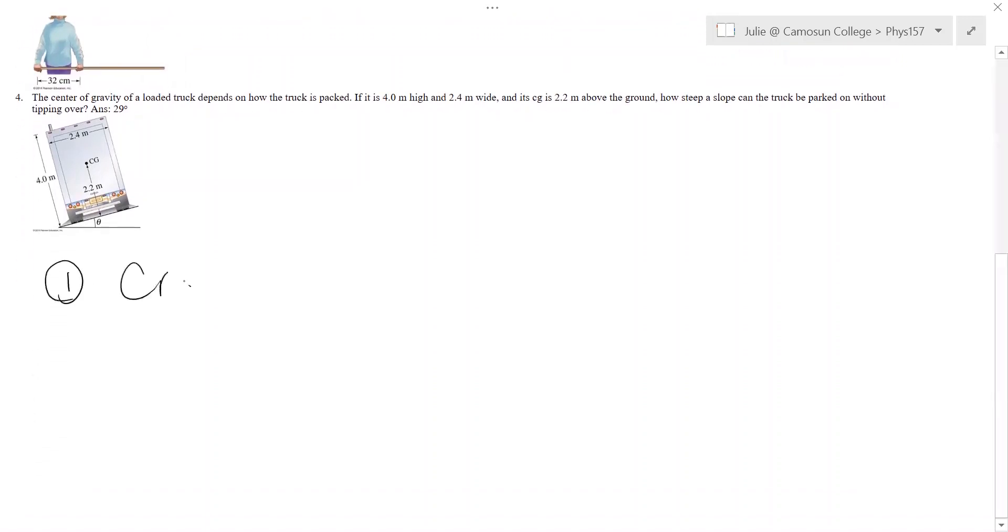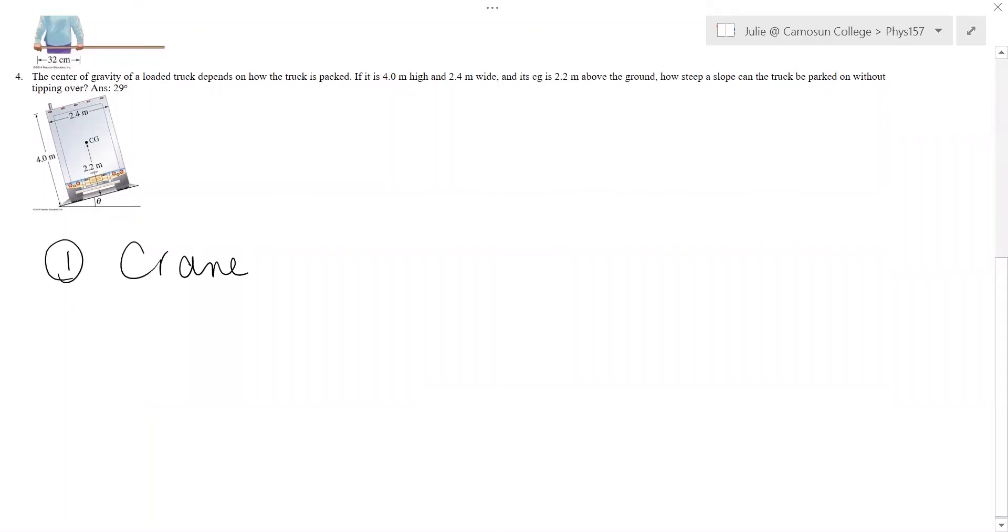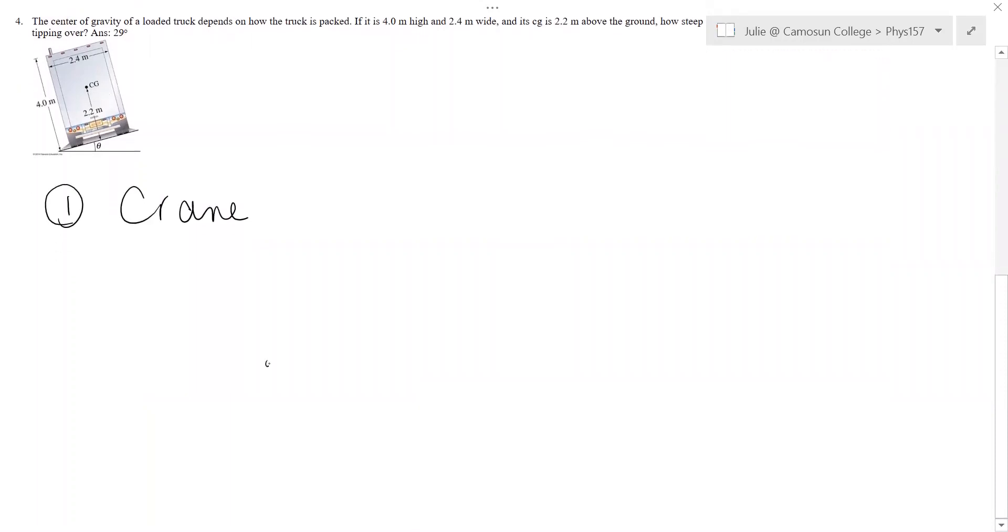So number one is the crane. Remember you always have to define your axis of rotation. If nothing is moving you can put your axis of rotation anywhere you want but there's usually a pretty good place to put it. Like for example the support of the cross bar there is a good one. So the air conditioning unit is hanging here.